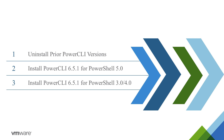First, I'll start with how to uninstall previous versions of PowerCLI. Next, I'll cover how to install this new version of PowerCLI with PowerShell version 5. Then lastly, I'll go through the install process of PowerCLI with PowerShell versions 3 or 4.